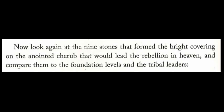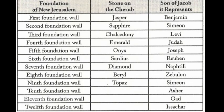Now look again at the nine stones forming the birthright covering on the anointed cherub who led the rebellion, and compare them to the foundation levels and tribal leaders. Notice that the stones on the cherub — he has all of them except the final three: the 10th, 11th, and 12th. Lucifer does not have those.